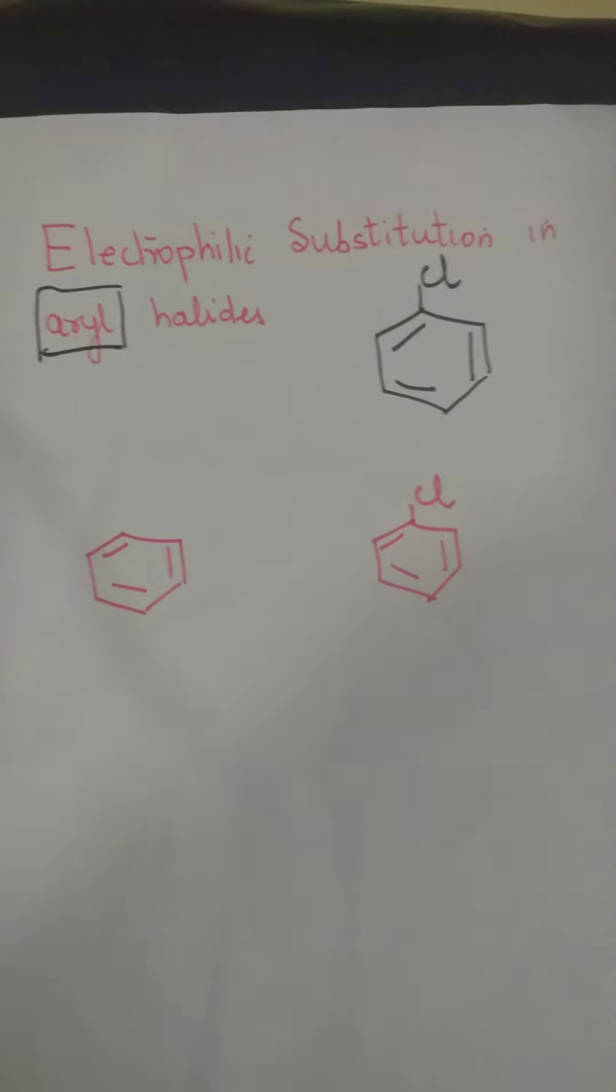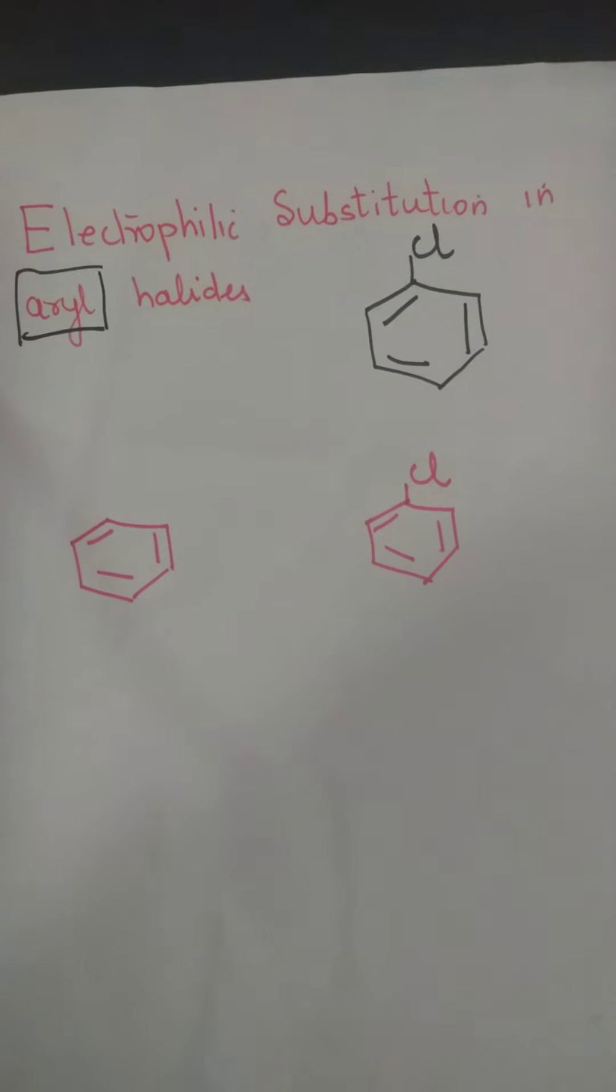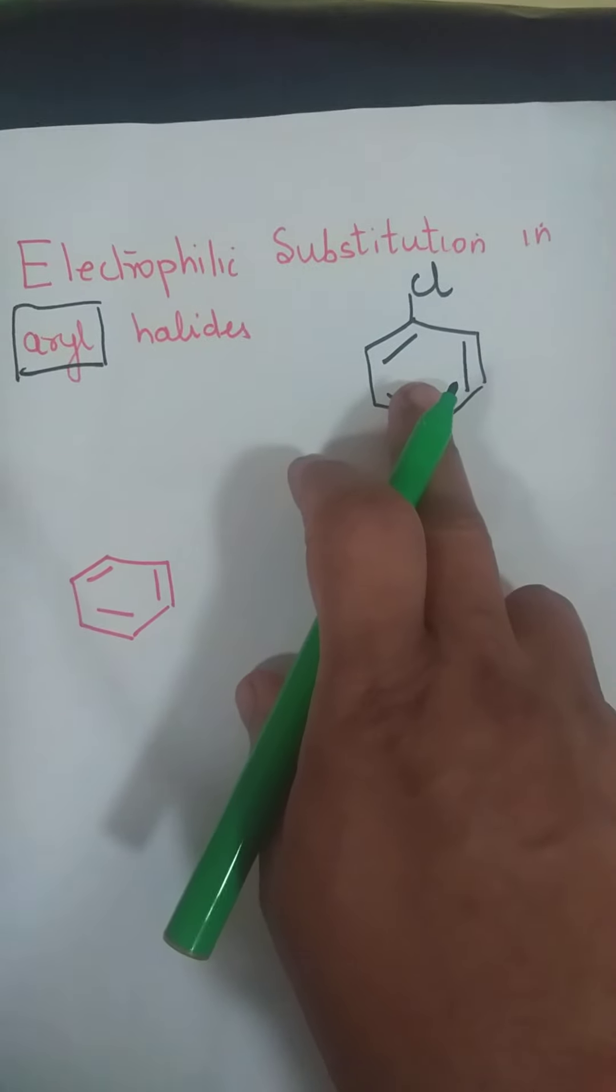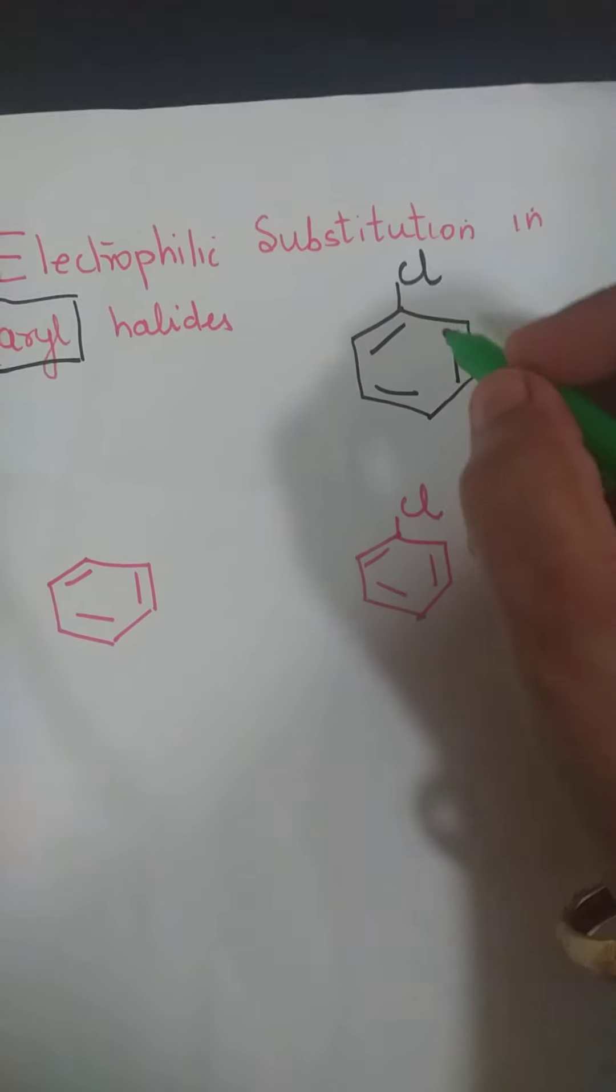Hi everybody, I'm meeting you after a long time and what I'm going to discuss today is electrophilic substitution in aryl halides. Now this is an aryl halide. Aryl halide kya hota hai? Aromatic ring pe jahan halogen aa gaya, it's an aryl halide. And this compound is chlorobenzene.